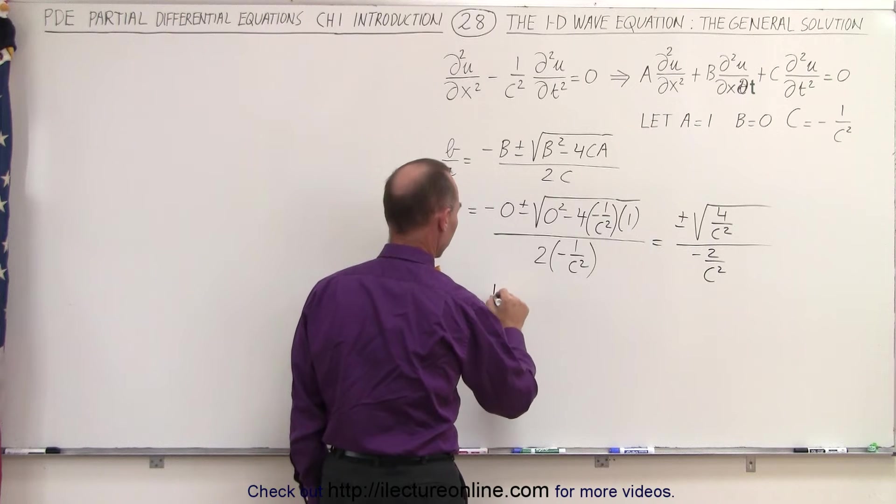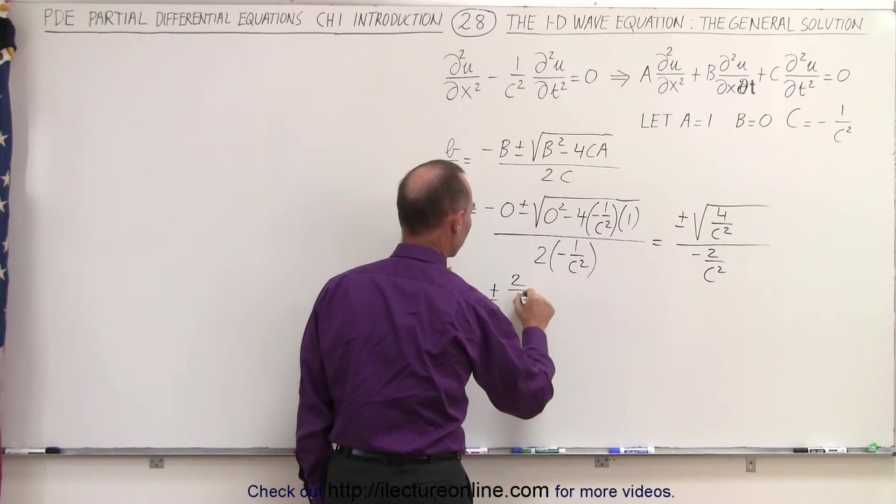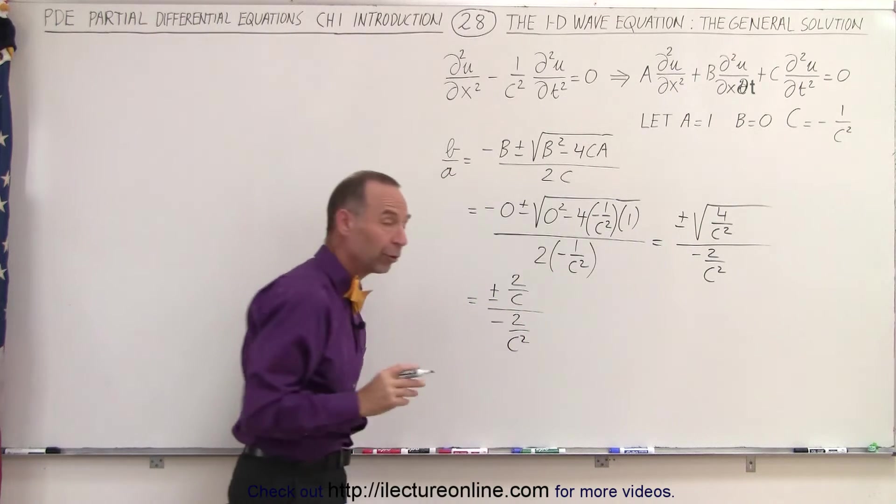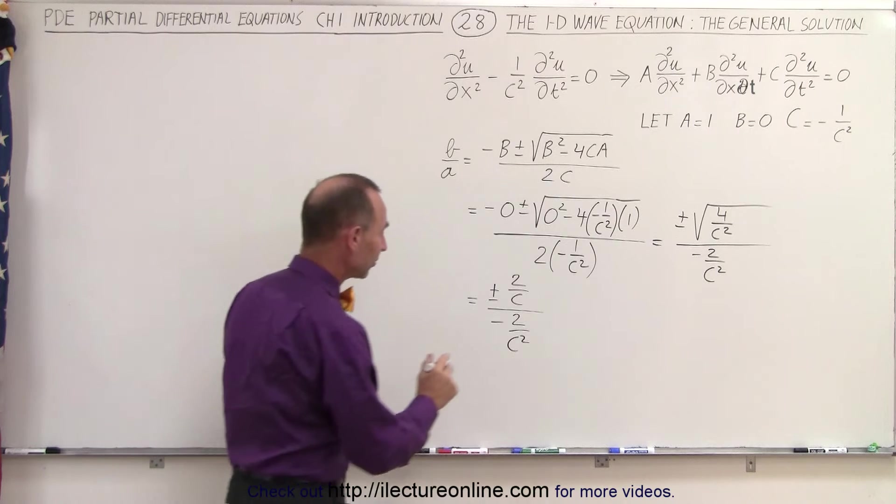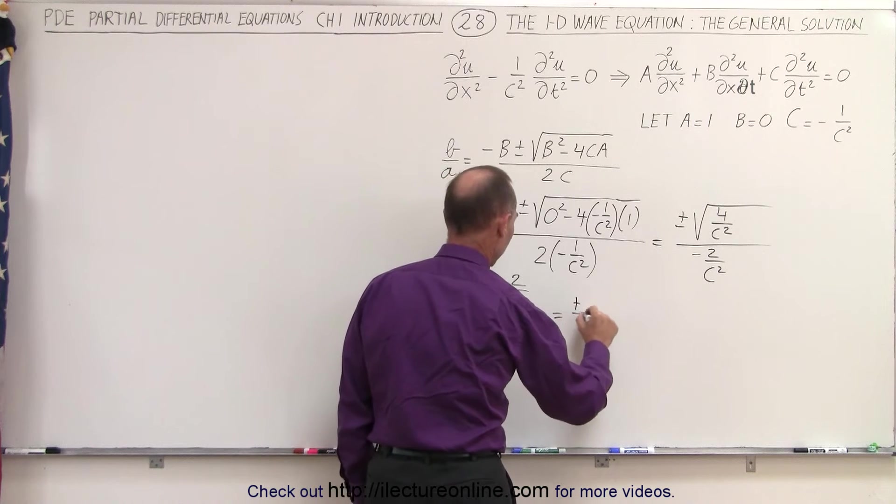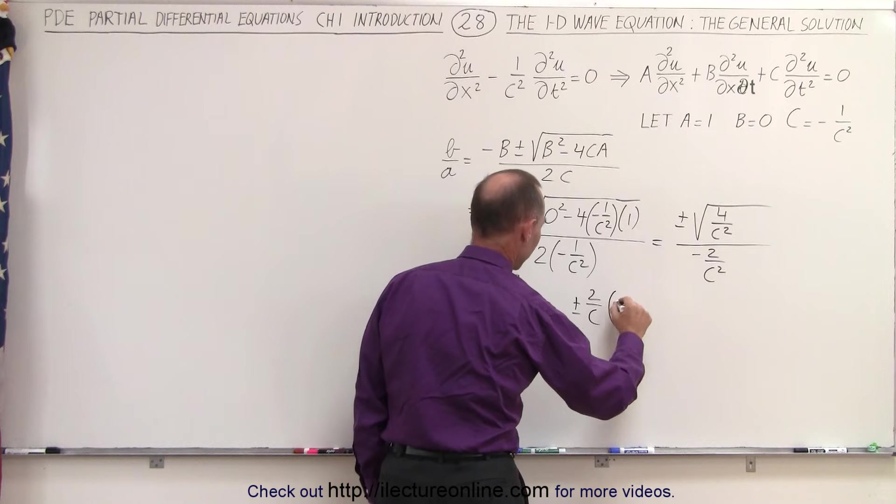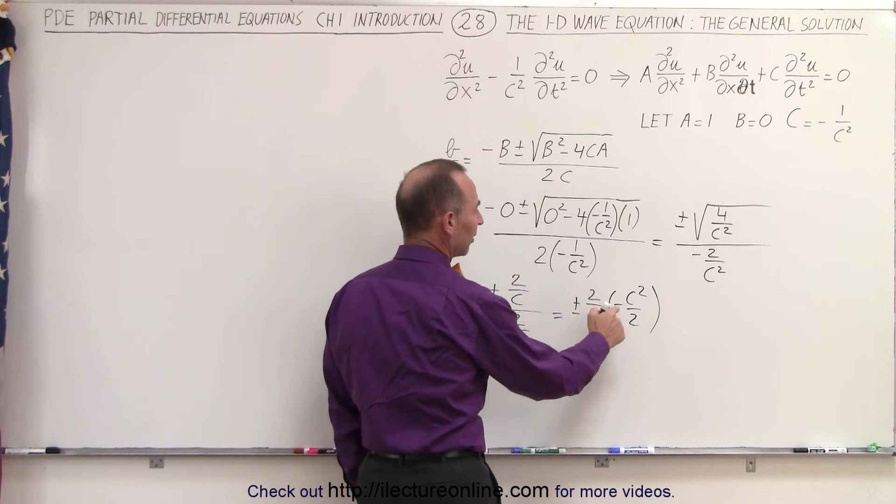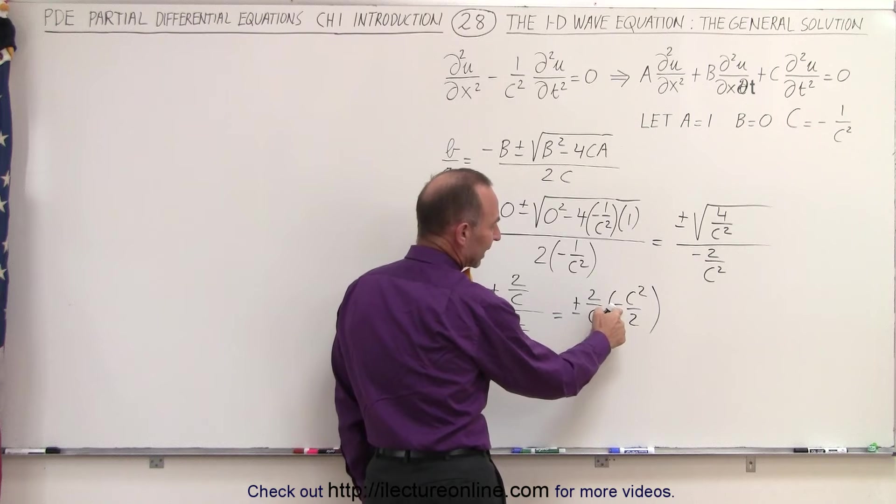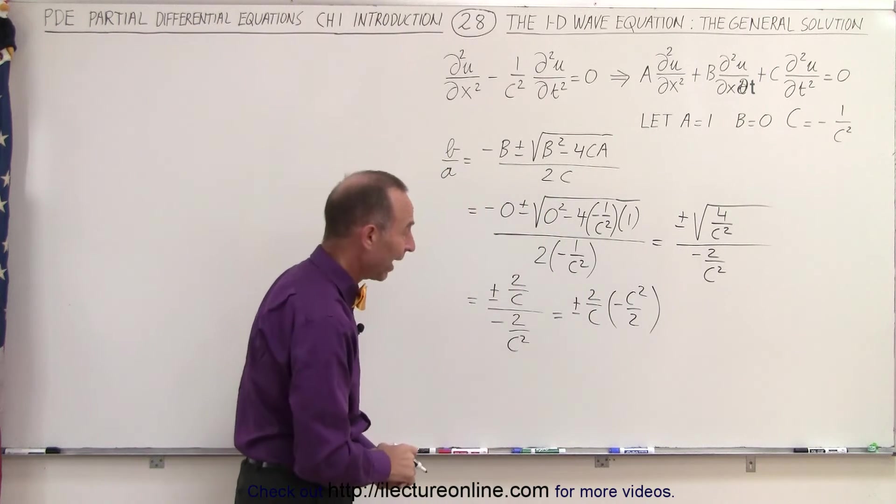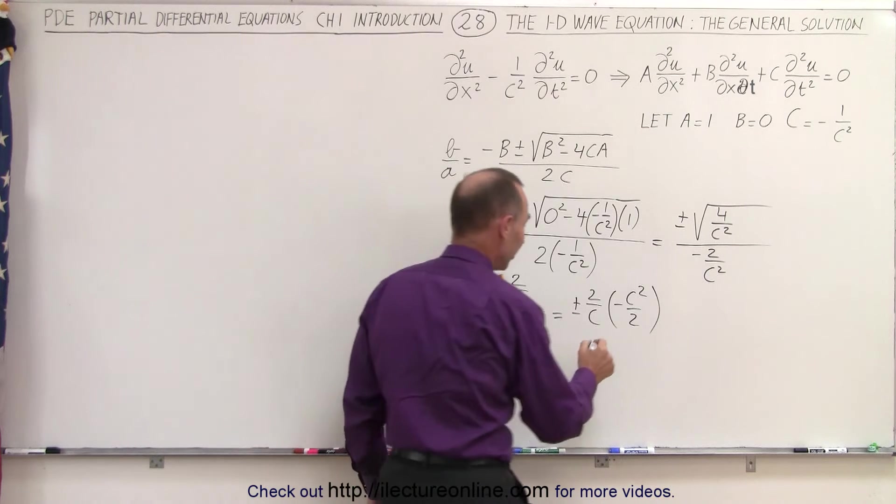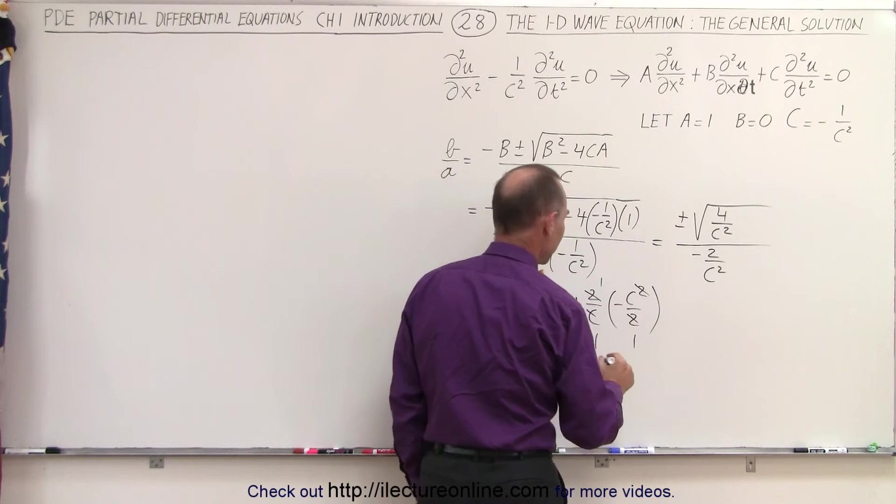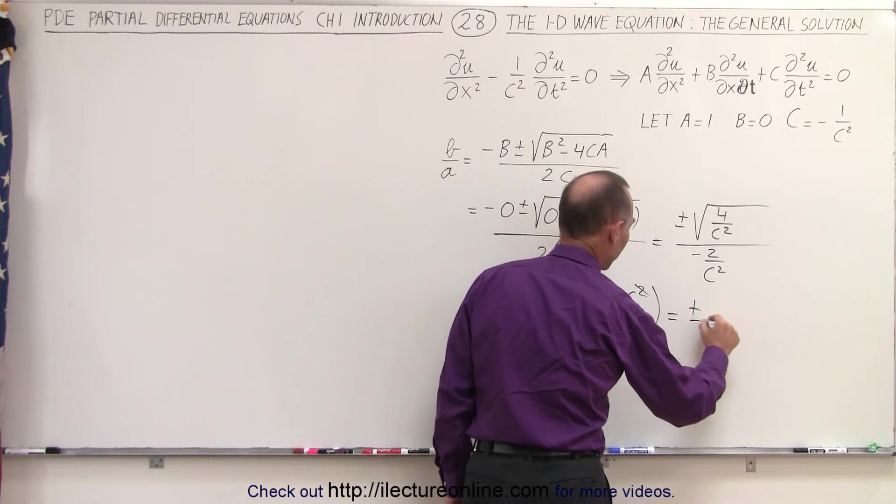If we simplify that even further, that gives us plus or minus 2 over c divided by minus 2 over c squared. We have a fraction divided by a fraction, so this becomes plus or minus 2 over c multiplied times the minus c squared over 2. This negative is going to be negated by the fact we take the positive or negative solution of that, so the 2s cancel out, the c cancel out, and so we end up with plus or minus c.